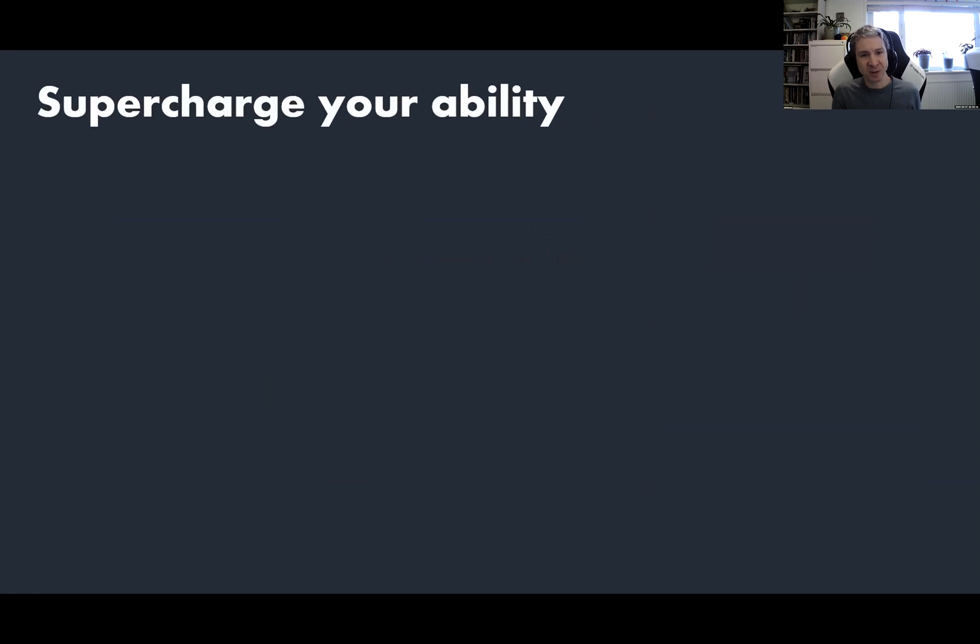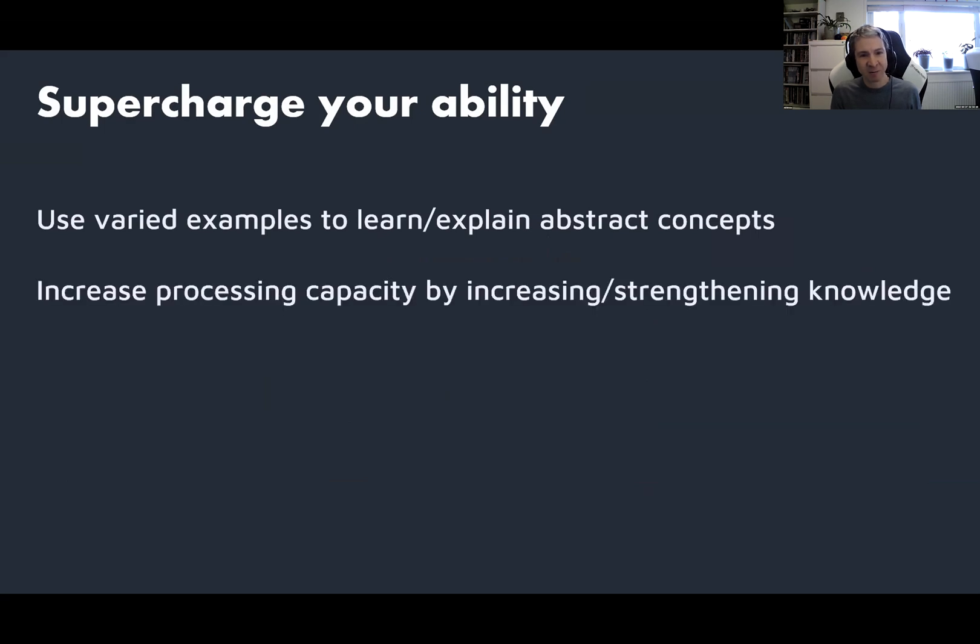So how can we use all these lessons to supercharge our ability to learn, function, and solve problems? The lessons we had were to use varied examples to learn and explain abstract concepts. Your brain likes to learn the abstract by joining together concrete examples. We could increase our processing capacity by increasing and strengthening our knowledge. So by learning more in long-term memory and increasing the size of the items in our long-term memory, we can actually free up working memory capacity to deal with more problems. And this is another way that your brain is not like a computer. This is quite counterintuitive if you think of it from how a CPU functions. And finally, you can improve problem solving within a specific domain, but it's not shared between different domains. And if you want to know how good somebody is at solving problems within a domain, a particular programming language or framework or whatever, then you should look at that specific skill, not by trying to test it by coming at it from another angle.